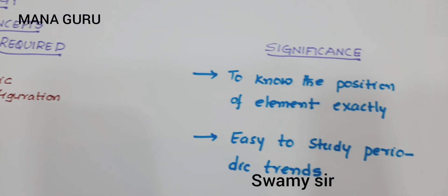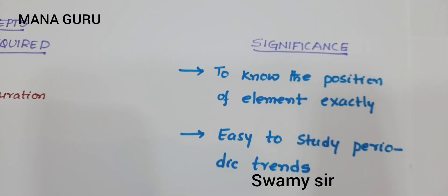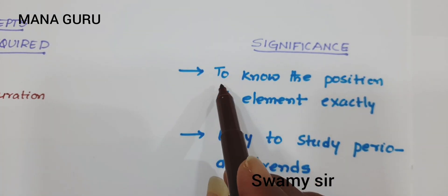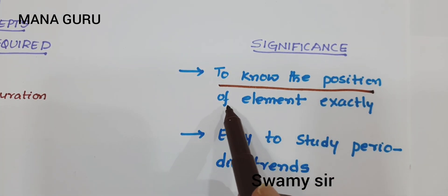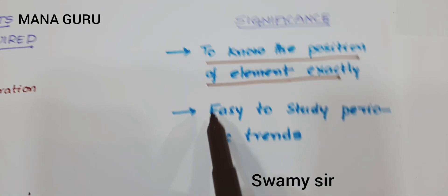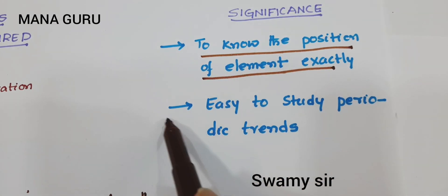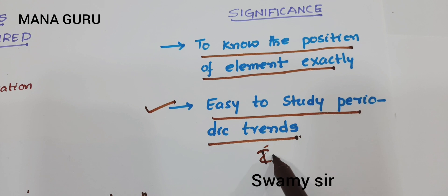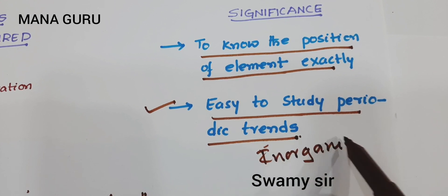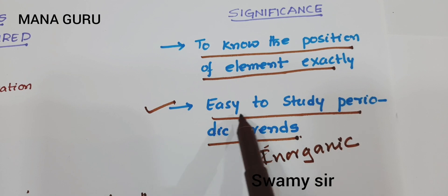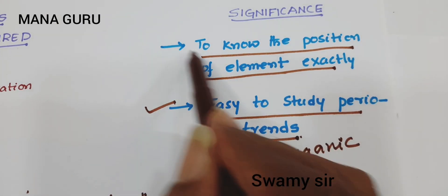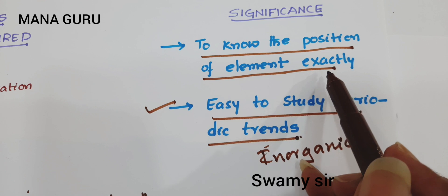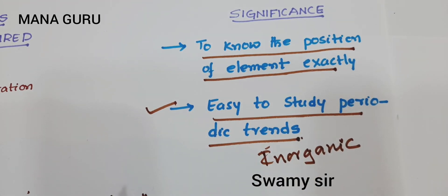What is the significance of knowing this position? Students, because of this video, you will pick out the position of an element in the periodic table exactly. And second, you will find it easy to study periodic trends. Periodic trends play a very important role in total inorganic chemistry, so it is a linked topic. Students need to study periodic trends properly, and for that, I have made some tricks here.